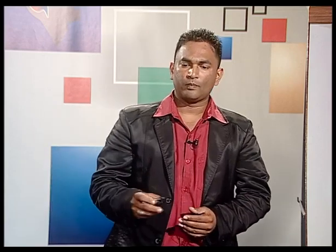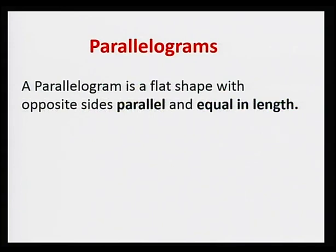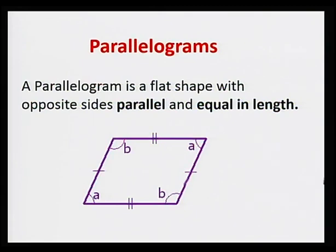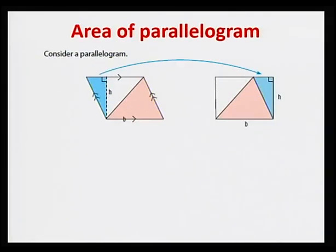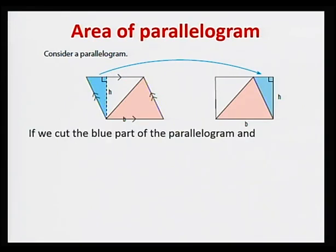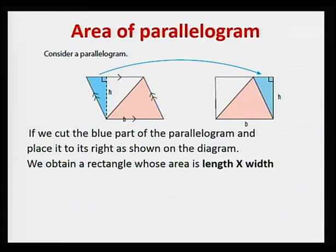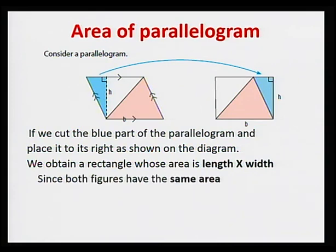Let's see how to calculate area of parallelograms. A parallelogram is a flat shape with opposite sides parallel and equal in length. To calculate the area of a parallelogram, we cut the side colored blue and paste it to the right-hand side of the second figure. Now we obtain a rectangle. The height of the parallelogram is the width of the rectangle, and the base is the length of the rectangle. So area of rectangle is length times width. Since both figures have the same area, we conclude that area is base times height.